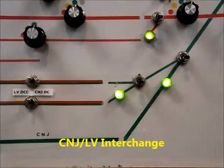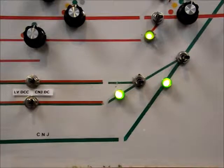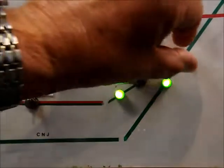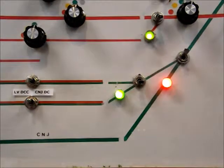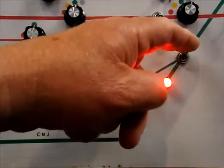The turnouts for the CNJ interchange track are controlled from the Lehigh Valley's Wilkes-Barre control panel. They're both tortoise turnouts which indicate their position. They should always be left in the normal or green position.